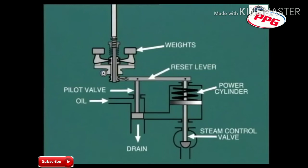In this configuration, a change of turbine speed causes the centrifugal weights to move. For example, a decrease in speed causes the centrifugal weights to move inwards and lower the pilot valve.